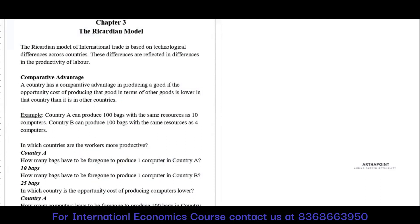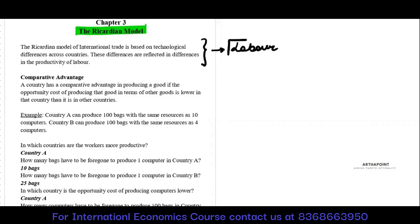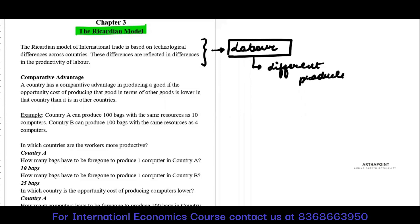In this lecture, we are going to begin with an important model known as the Ricardian model. The Ricardian model basically understands that two countries can have only one factor of production — labor. But the same labor can have different productivity in the two countries.